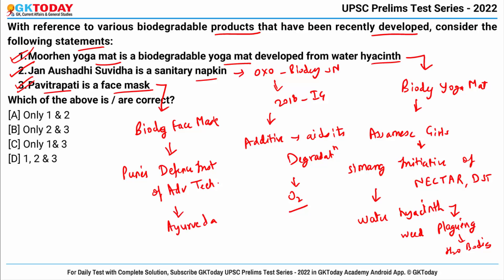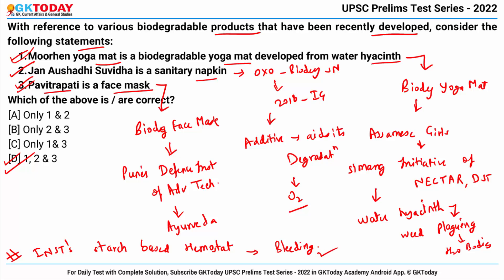All three statements are correct and hence the answer is all of one, two, and three. Additionally, INST's starch-based hemostat is a biodegradable material used for stemming life-threatening bleeding; it works by absorbing excess fluids and concentrating the natural clotting factors in the blood.